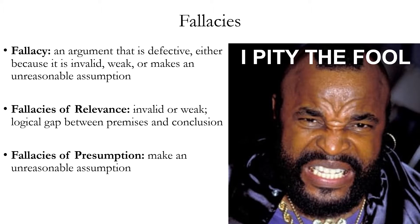Fallacies of relevance are ones that are logically invalid or weak, which means there is a logical gap between premises and conclusion. The premises fail to give adequate reason to believe the conclusion, even if they are reasonable or even if they are true. In fallacies of presumption, the premises include an unreasonable assumption.